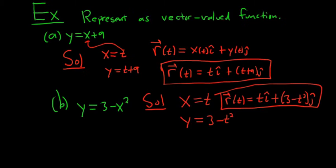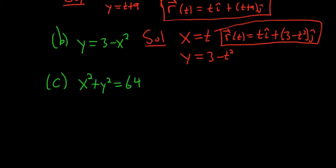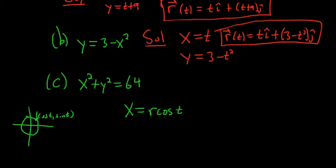Let's raise the difficulty. For part c: x squared plus y squared equals 64. This is a circle. Whenever you want to parameterize a circle, you can always use sine and cosine. The unit circle is parameterized by (cos t, sin t), so every point is of that form. For a circle of radius r centered at the origin, x equals r cosine t and y equals r sine t.